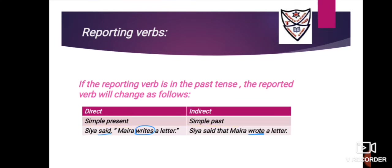Because the reporting verb is 'said,' we must change the reported verb. Example: 'Siya said, Myra writes a letter.' Step one: underline 'said,' circle 'writes.' Because the reporting verb is 'said' (past tense), 'writes' (simple present) changes to 'wrote' (simple past). Answer: 'Siya said that Myra wrote a letter.' So simple present changes to simple past.